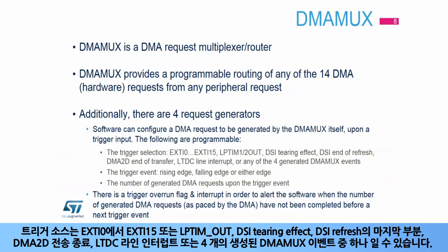and the number of generated DMA requests upon each trigger event. The trigger source may be EXTI 0 to EXTI 15 or LP TIM out, DSI tearing effect, DSI end of refresh, DMA 2D end of transfer, LTDC line interrupt, or any of the four generated DMA MUX events.